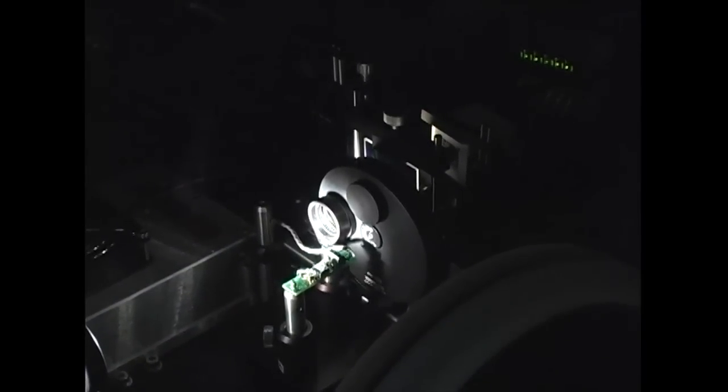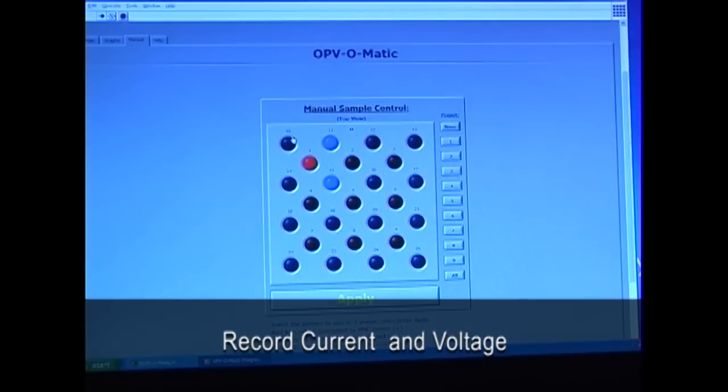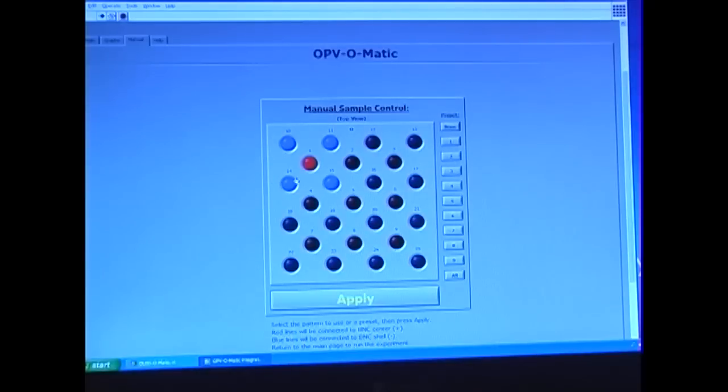A high intensity light source simulates sunlight. It is directed through the wheel containing several optic filters. The computer can select data from any of these test cells corresponding to each contact pin on the cable.